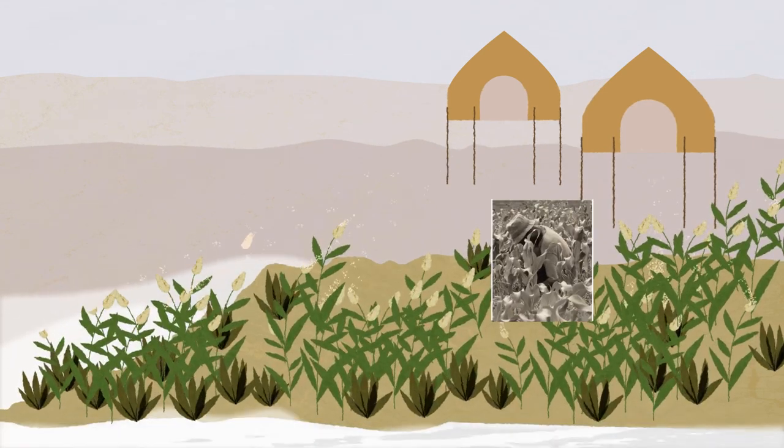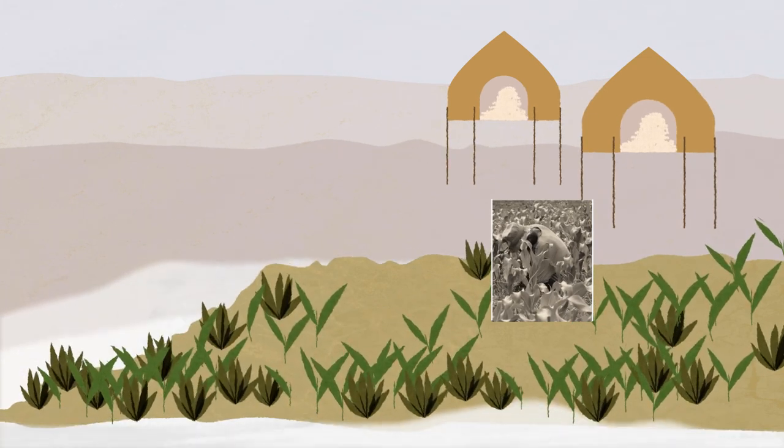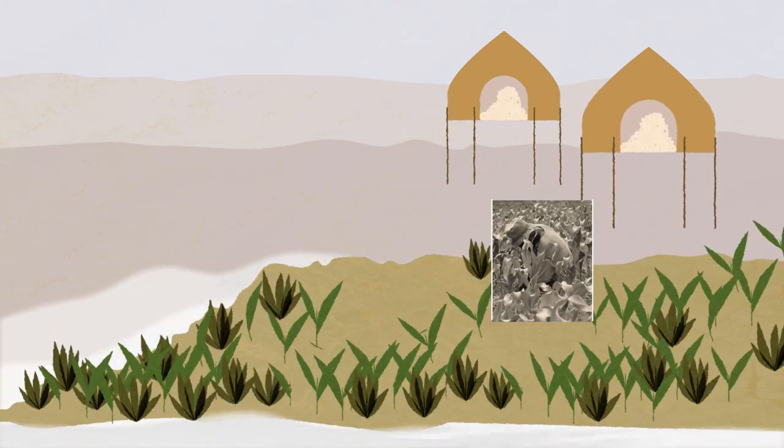By taking advantage of the environmental benefits, this sustainable type of farming serves as a natural vegetable garden by the river.